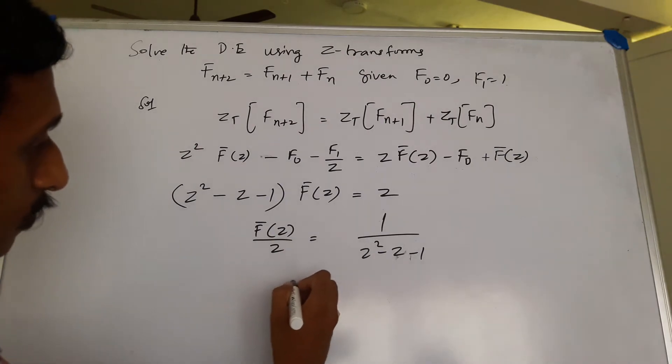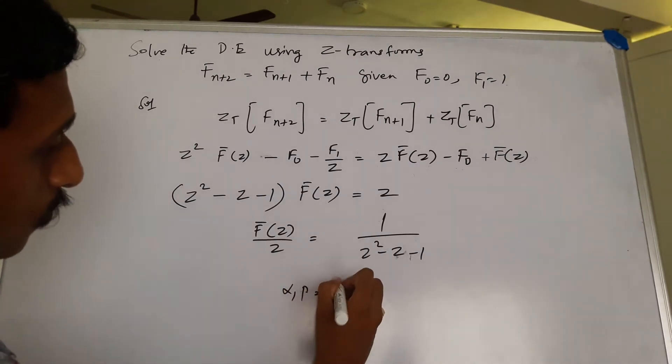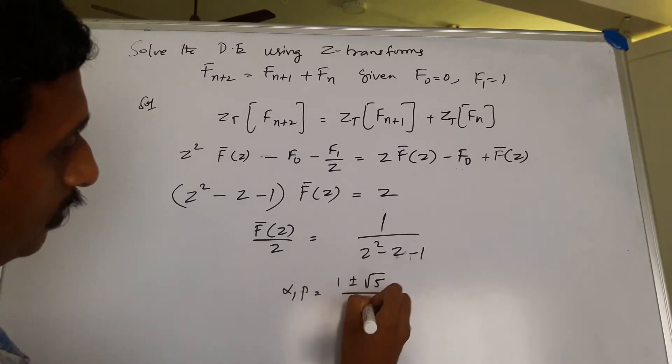Now we have the roots for this, which are alpha and beta: (1 ± √5)/2.